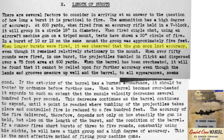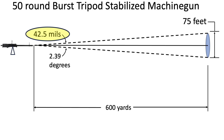Bullet strike grouping increases even though the gun is held steady. The grouping increases to a 75-foot diameter circle for a .50 round burst fired from a tripod-mounted machine gun. This cone of dispersion equates to 42.5 mils. A .50 round burst equates to around 3.8 seconds of continuous fire.